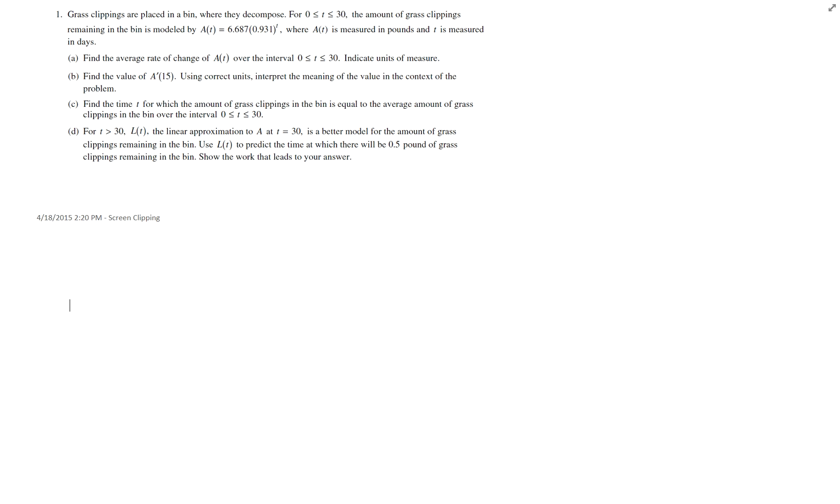Grass clippings placed in a bin where they decompose from zero to 30 days. The amount of grass clippings is modeled by this function right here, where A is measured in pounds and T is measured in days. Find the average rate of change over the interval from zero to 30, indicate the units of measure.